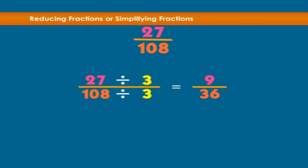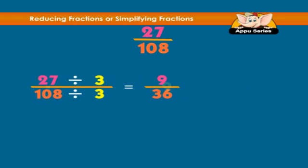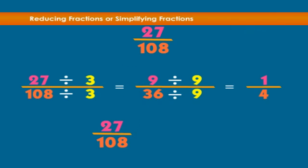Now it's easy. Do you see that 9 goes in as well? 9 divided by 9, over 36 divided by 9, equals 1 quarter. So 27 over 108 equals 1 over 4.